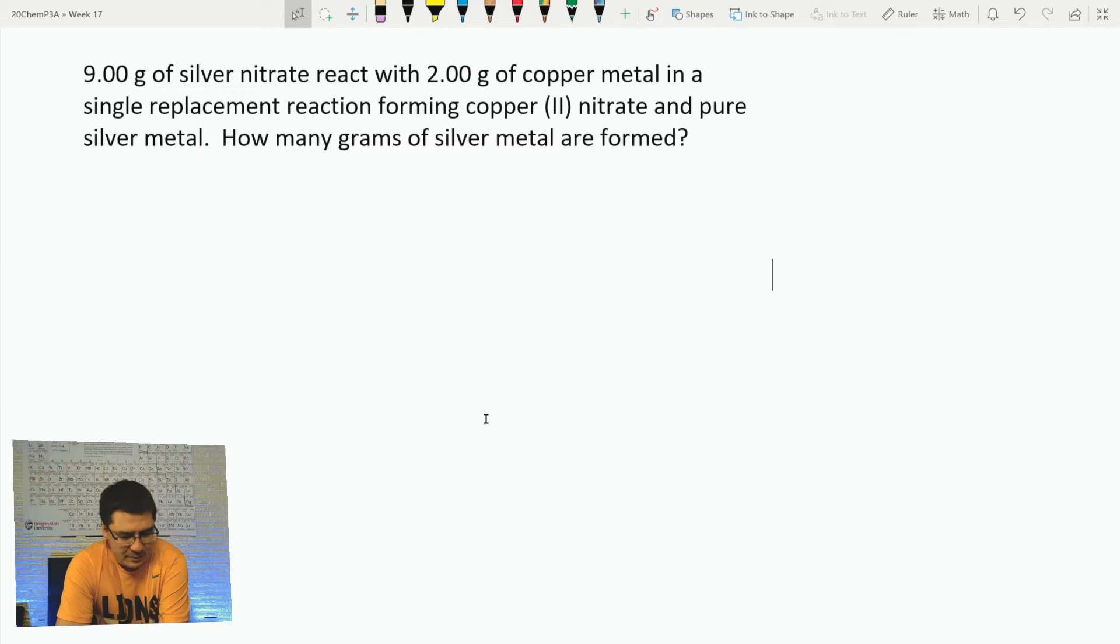We're going to stick with bicep curls, or B CURLS. I've got a second problem for us. It says: 9.00 grams of silver nitrate react with 2.00 grams of copper metal in a single replacement reaction forming copper (II) nitrate and pure silver metal. How many grams of silver metal are formed?